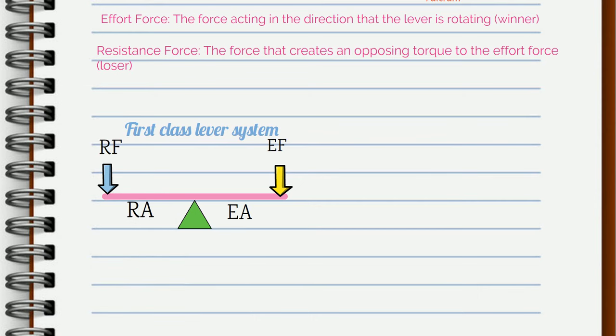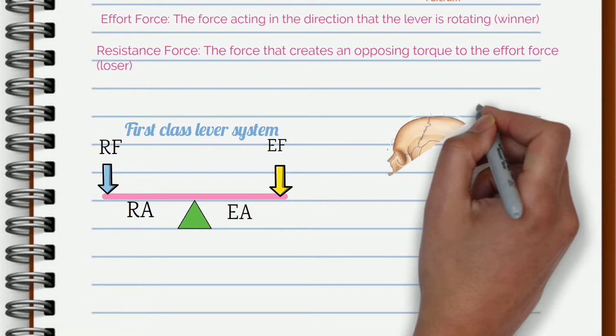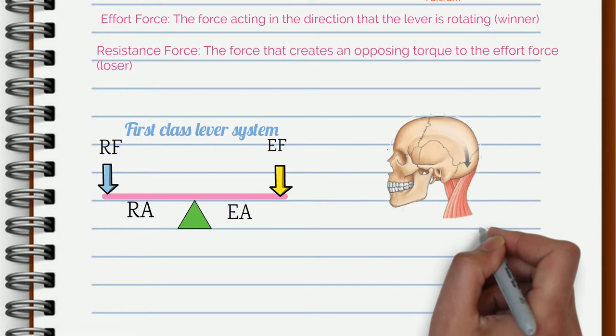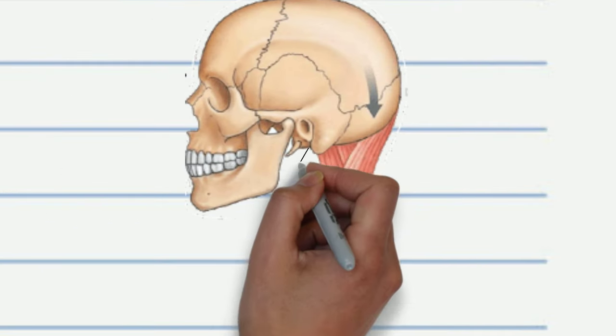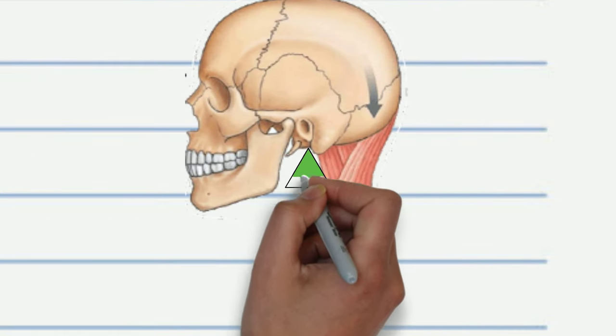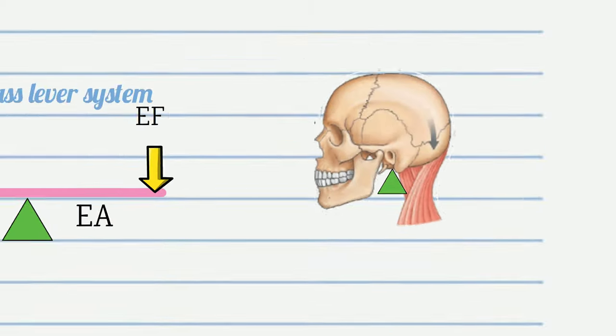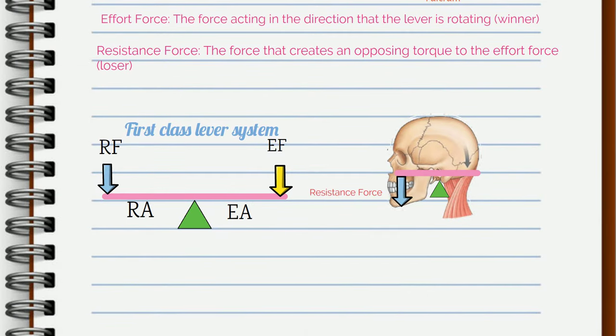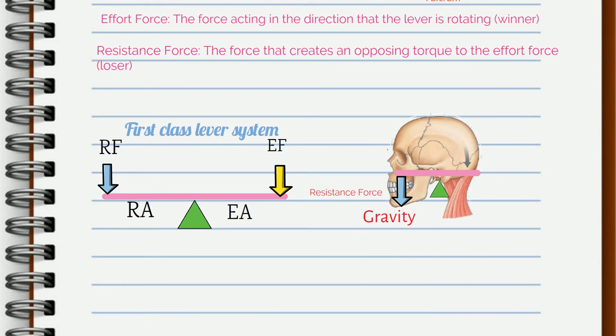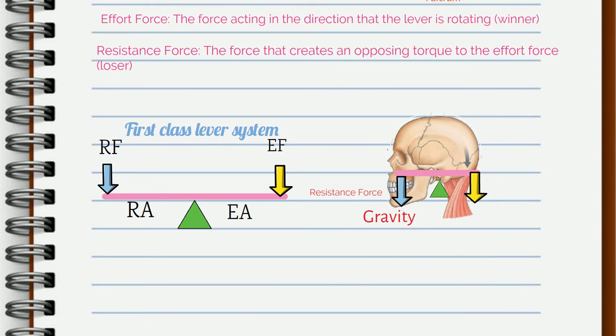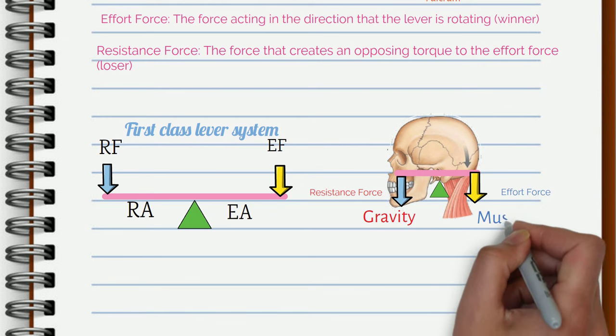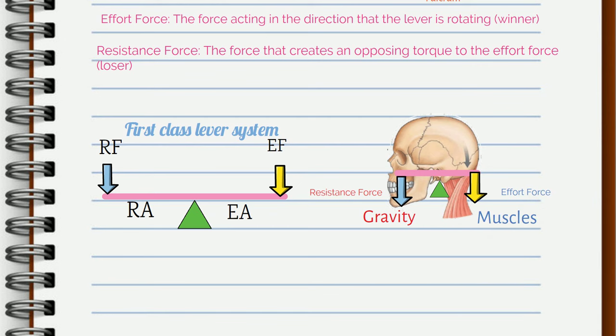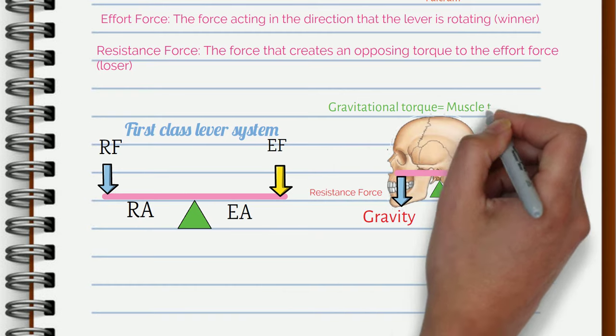An example of a first class lever system in the human body is maintaining equilibrium of the head. The axis of rotation is aligned with the mastoid process of the occiput. The resistance force here is gravity attempting to pull the head in a counterclockwise direction. The effort force comes from the cervical extensor muscles pulling the occiput clockwise in order to maintain the equilibrium. The head is in equilibrium when the torques on both sides are equal.